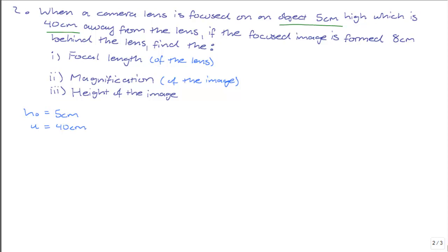And a focused image is formed 8cm behind the lens. So the image distance, V, is equal to 8cm.